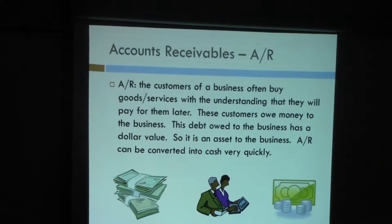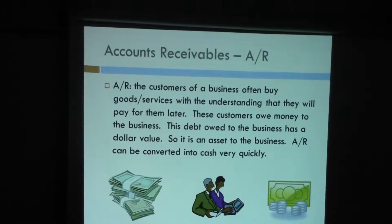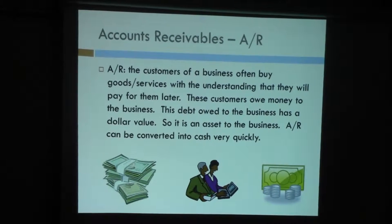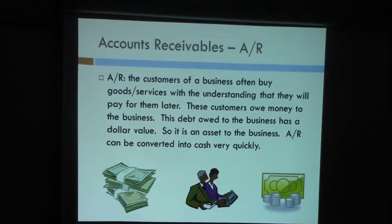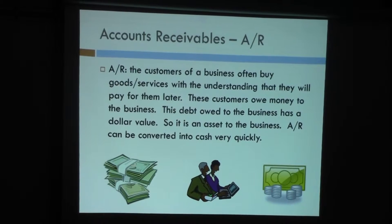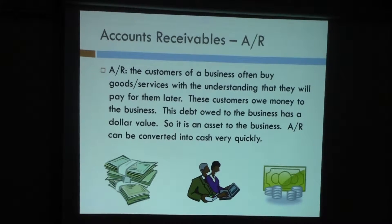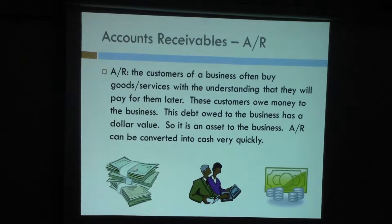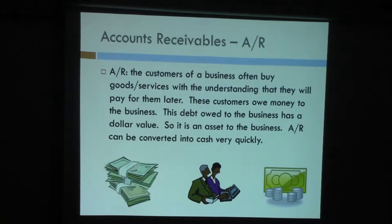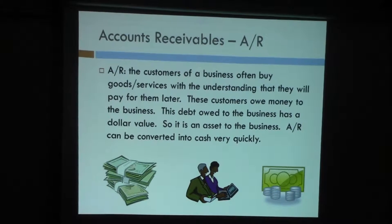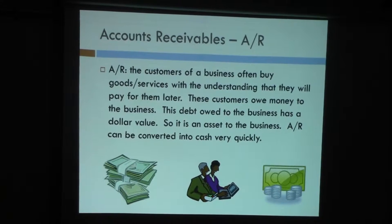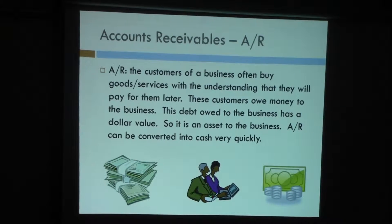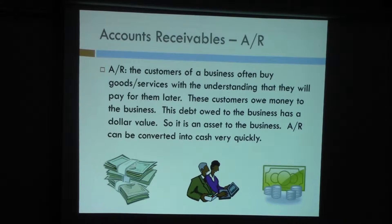Accounts receivable, or AR, is money that is owed to you. In business, not everything is done on cash or debit cards — a lot is done as receivables, especially in larger businesses. The client or customer promises to pay you within 10, 15, 20, or 30 days, and during that time the amount is owed to you. Accounts receivable is the second most liquid asset and is reported on your balance sheet.